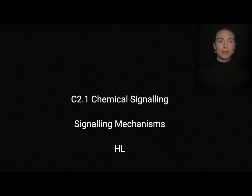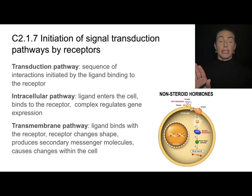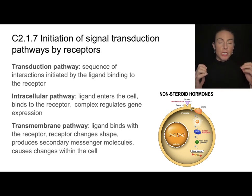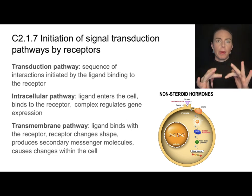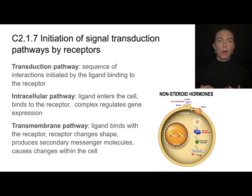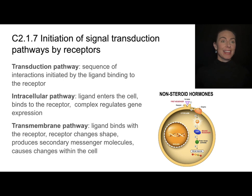This is a video for a higher level C2.1 on chemical signaling, and we'll be taking a close look at signaling mechanisms. There's a lot of big words in this topic, and we're going to go into a lot of detail on specific pathways, but keep your eye on the big picture: there are two major types of transduction pathways.